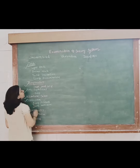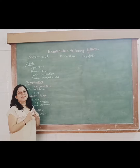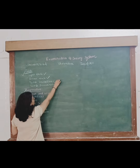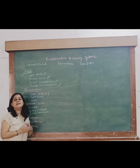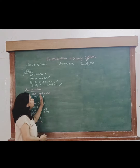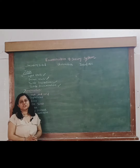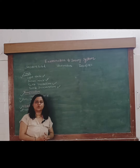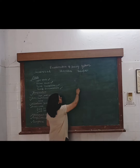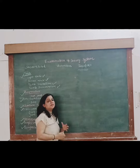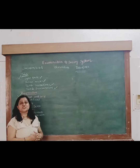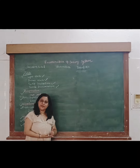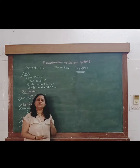For touch, we assess light touch, pressure touch, tactile localization, and tactile discrimination. You have to write down your observation — whether it is perceived equally on both sides or not — and your inference, whether the touch sensation is intact or impaired. If it is impaired, then you have to write down your finding.